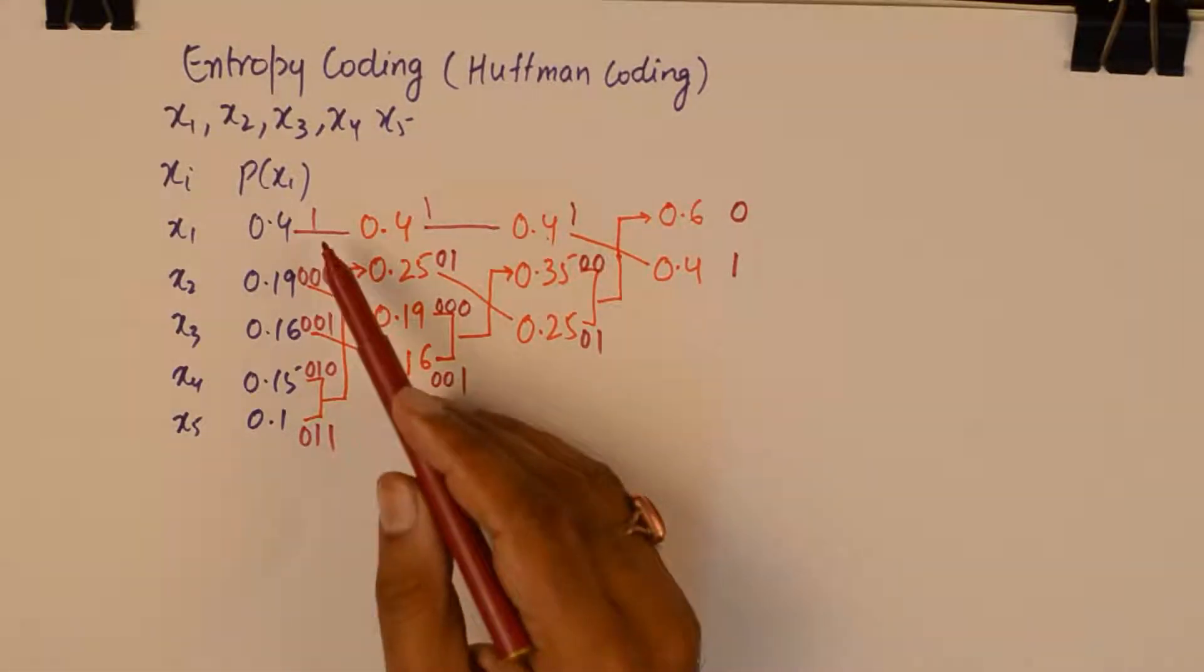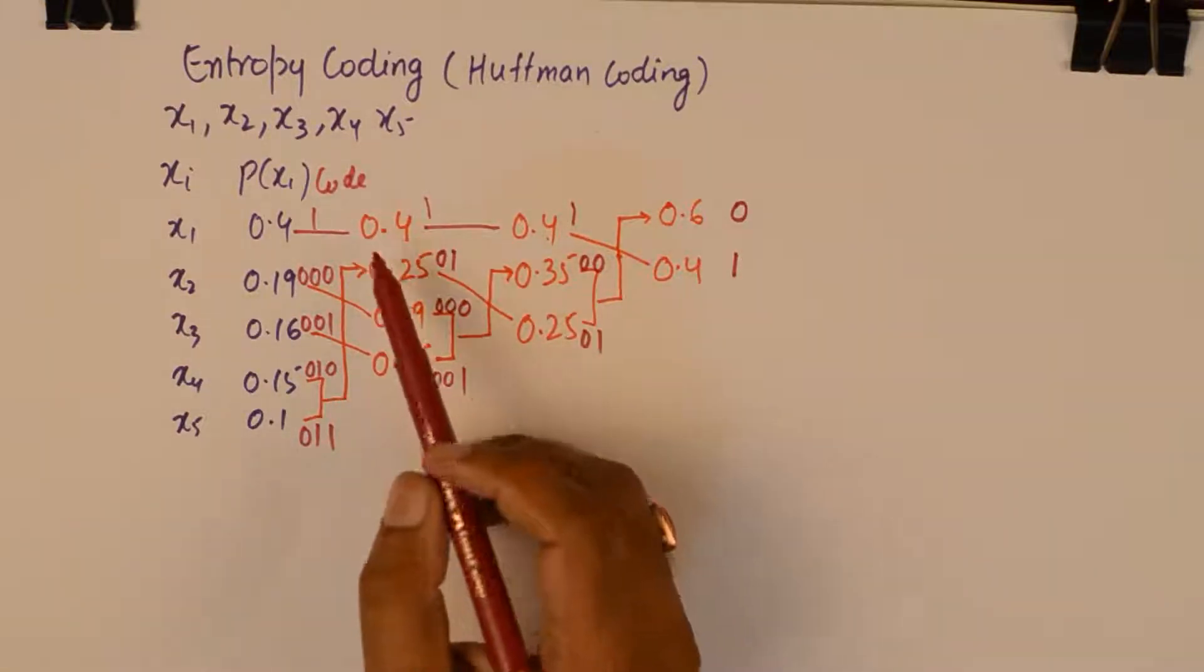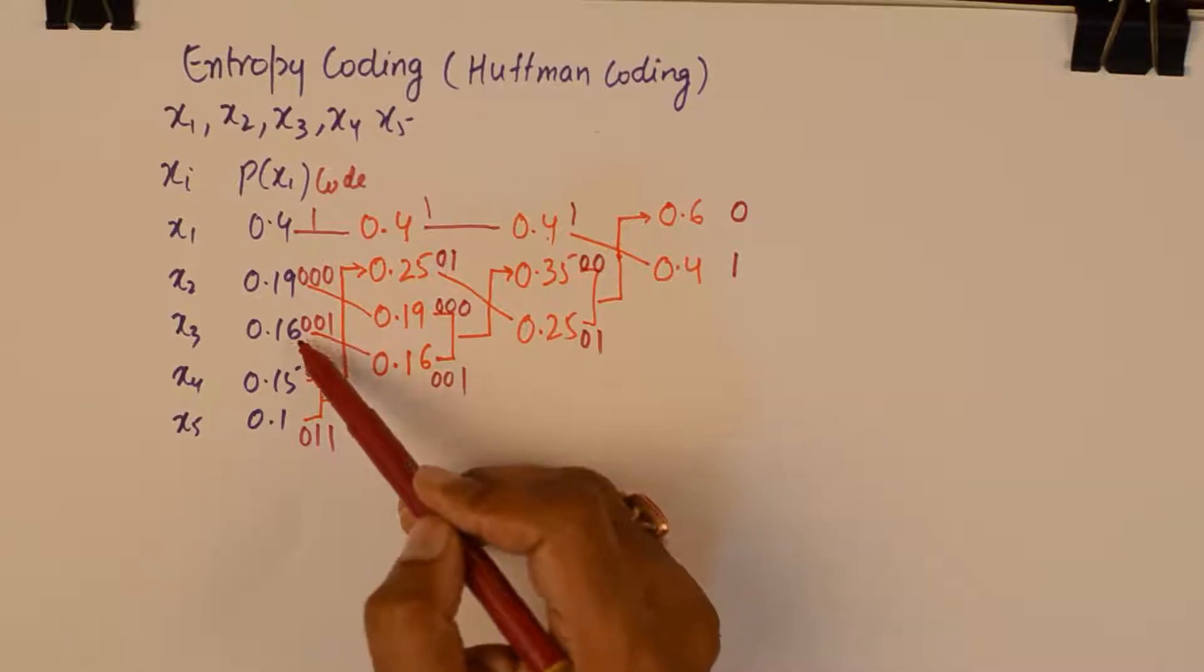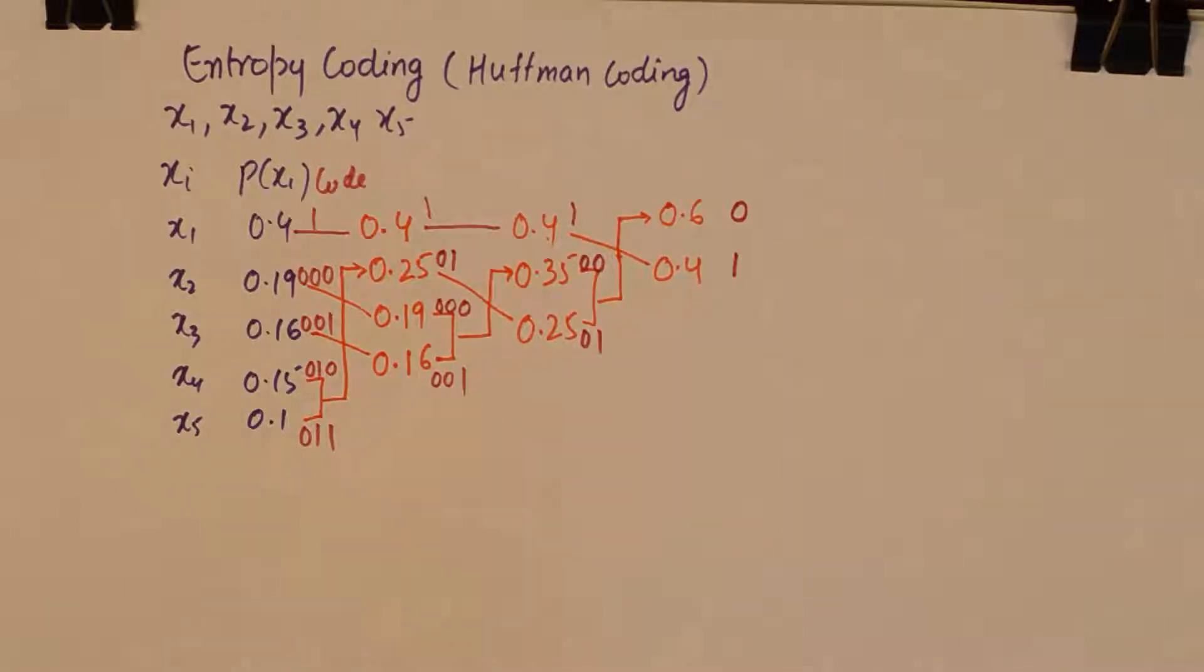So x1 gets a code of 1. This is the final code. Then 0.19 gets a 0 0 0. 0.16 gets a 0 0 1. 0.15 gets a 0 1 0. And 0.1 gets a 0 1 1.